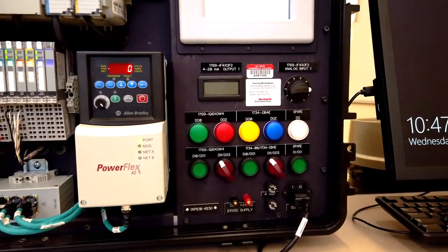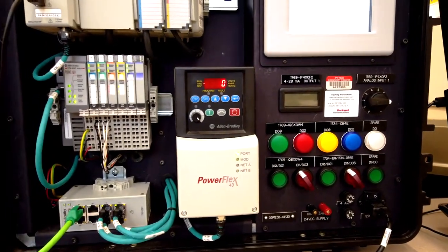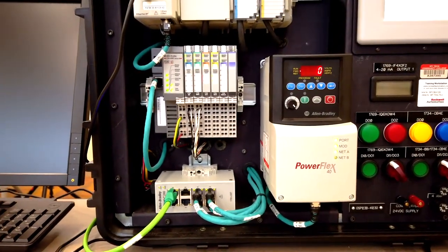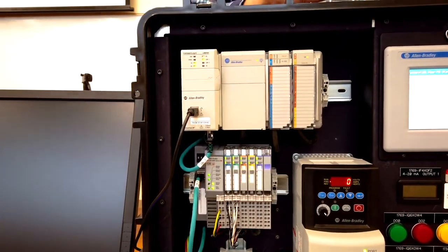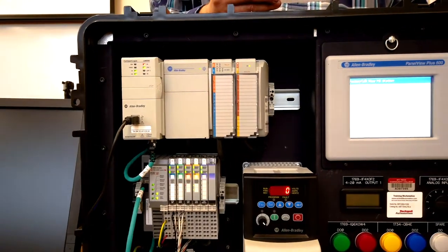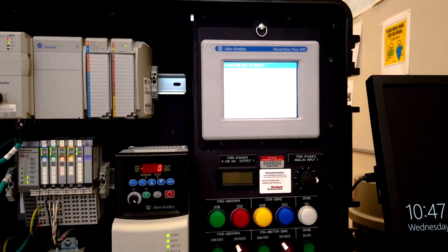Students learn to communicate to the PLCs via USB but more importantly via Ethernet connection. Ethernet is the preferred method of communication in industry. During these courses, students have the opportunity to receive two SACA certifications.